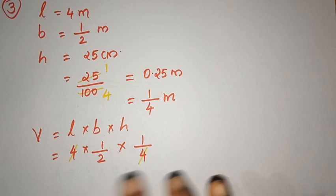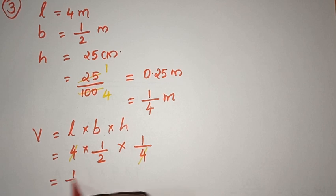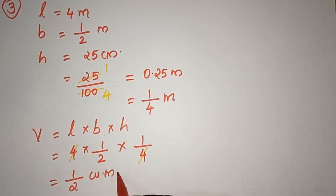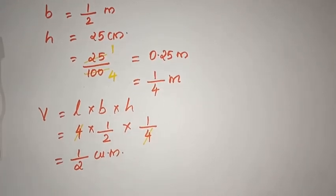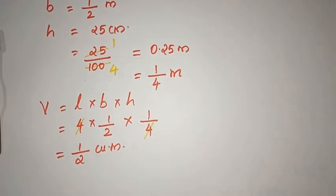If we cancel the denominator, the answer is 1/2 cubic meter. So the volume of this piece of wood is 1/2 cubic meter. Now we need to find the price.